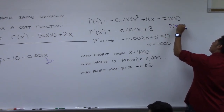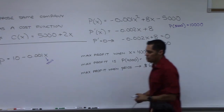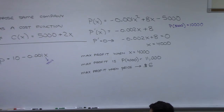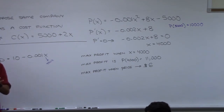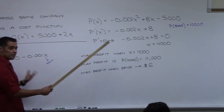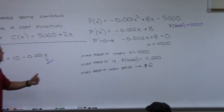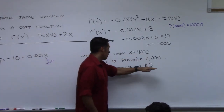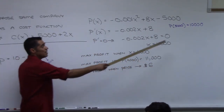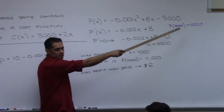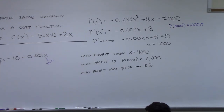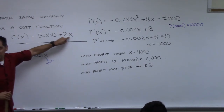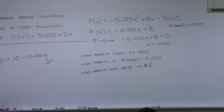In the revenue-only part, we said sell 5,000 markers at $5 to bring in the most money. But when we include cost, the optimum shifts: sell 4,000 markers at $6, and profit is $11,000 — better than what we'd have gotten at 5,000 markers for $5. It's better to raise price by $1; we sell a little less, but the lower production cost means higher profit in the end.